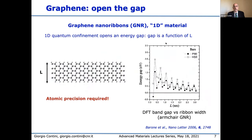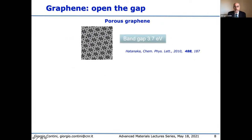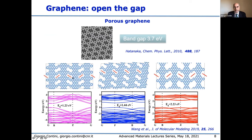Playing with the dimensionality, we can use graphene nanoribbons — cutting graphene to make ribbons. This shows the calculation of the energy gap as a function of the width of the ribbon. We have a gap, but also as a function of length there is a dramatic change in the energy gap, meaning we need atomic precision to make these nanoribbons. In two dimensions, porous graphene presents a bandgap of 3.7 eV. By changing the shape and dimension of the pores, we can achieve different polymer gaps from 1.2 to 2.3 eV.